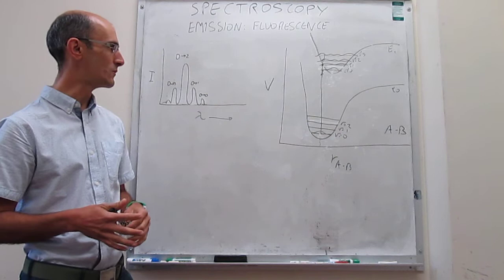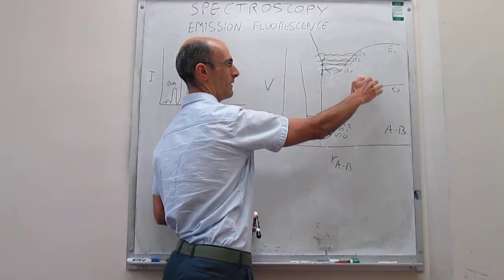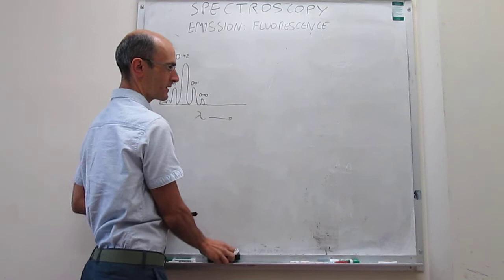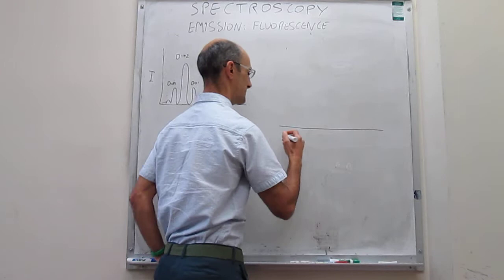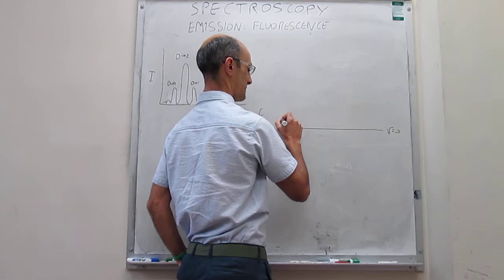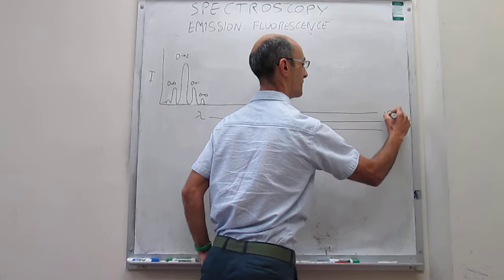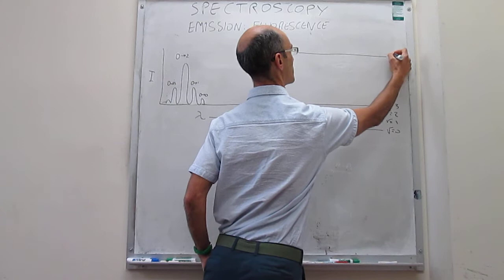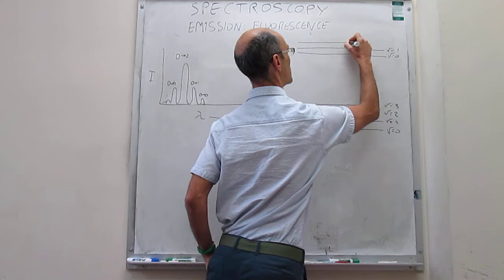I'm going to simplify this diagram a little bit by removing the potential energy curves for the diatomics. I'm still going to draw here electronic states with vibrational states on them. So the ground electronic state will have V0, V1, V2, V3, and then the excited electronic state E1 will have V0, V1, V2, and so forth.